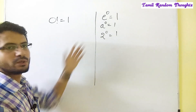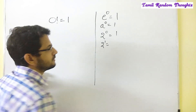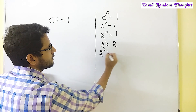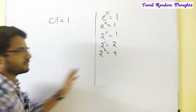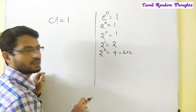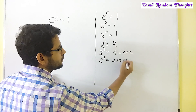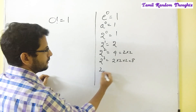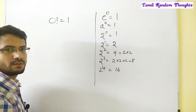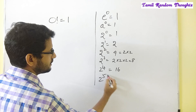How do you see this? Now, 2 power 1 is 2. 2 power 2 is 4. 2 power 3 is 8. 2 power 4 is 16. Now, we will see that 2 power 5 is 32.